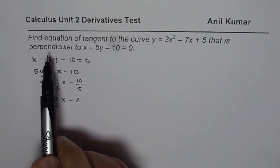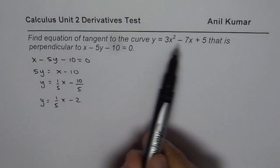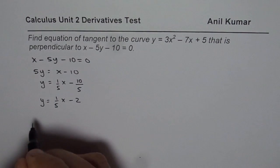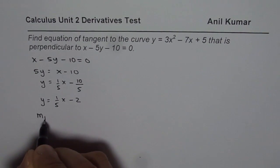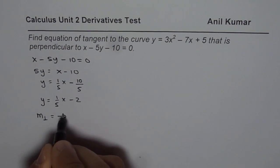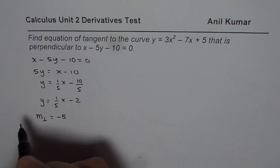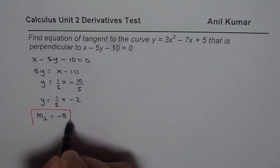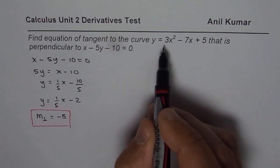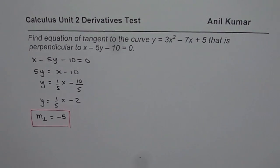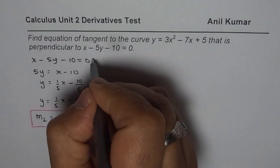Now we need to find equation of a tangent that is perpendicular. That means we are looking for a slope. Perpendicular slope will be negative reciprocal so it will be negative 5. So we need to have slope of negative 5 of a tangent line on this particular graph. So that is what the requirement is.